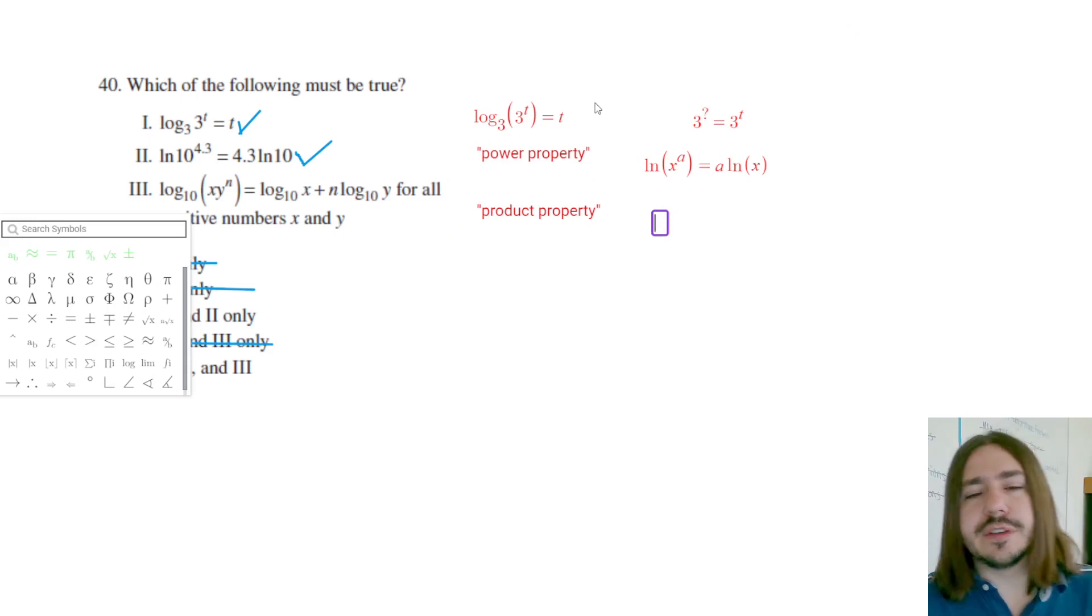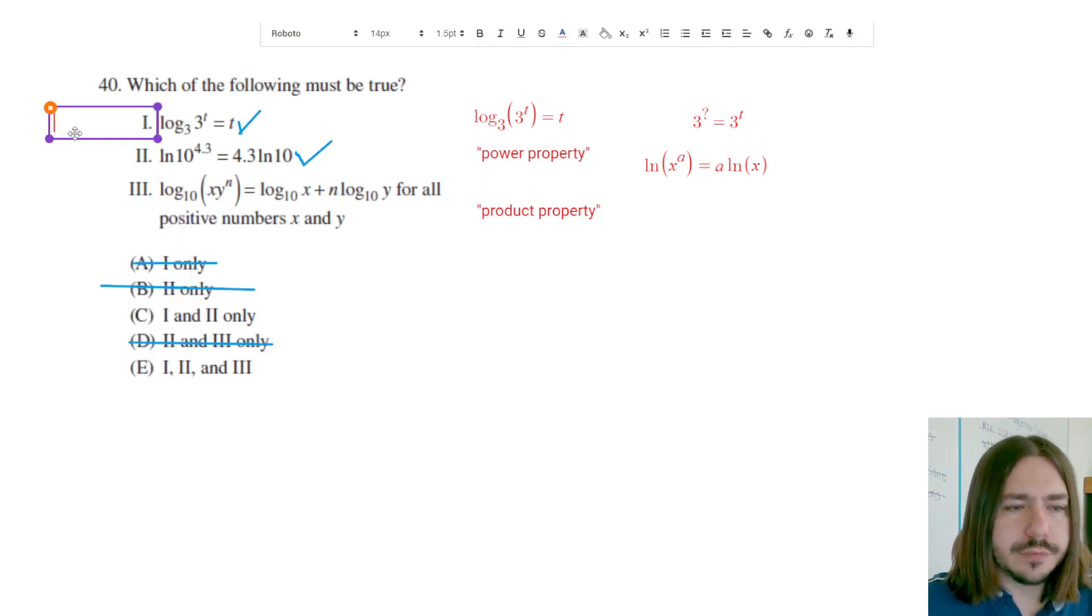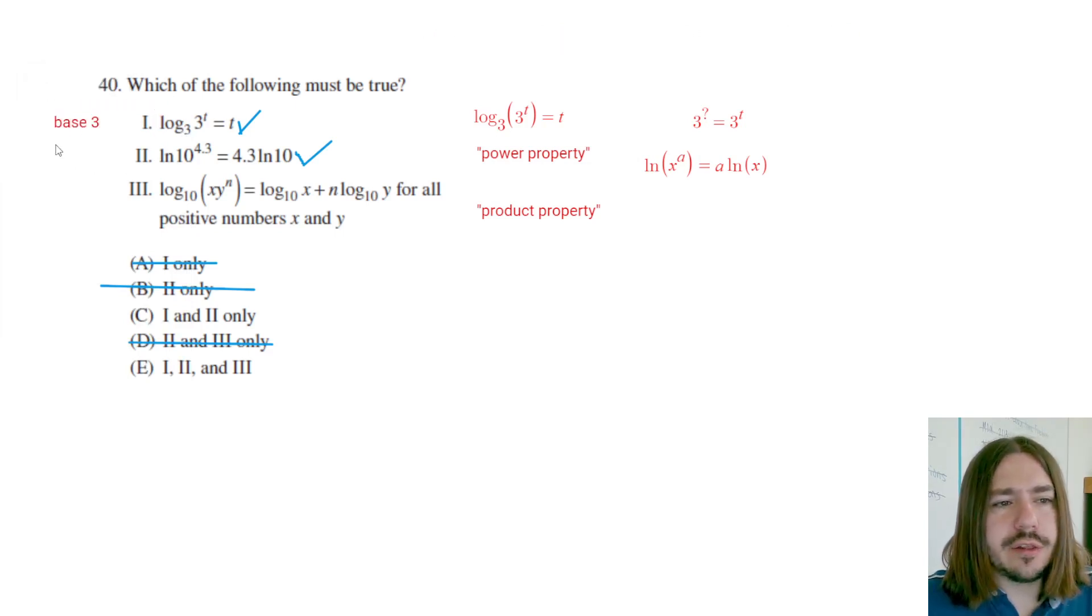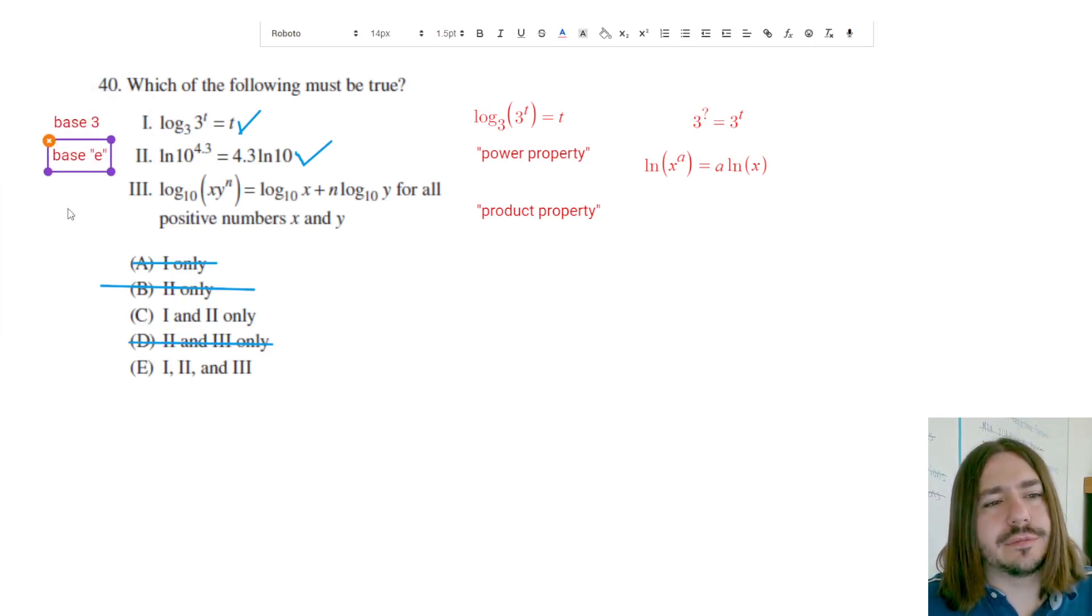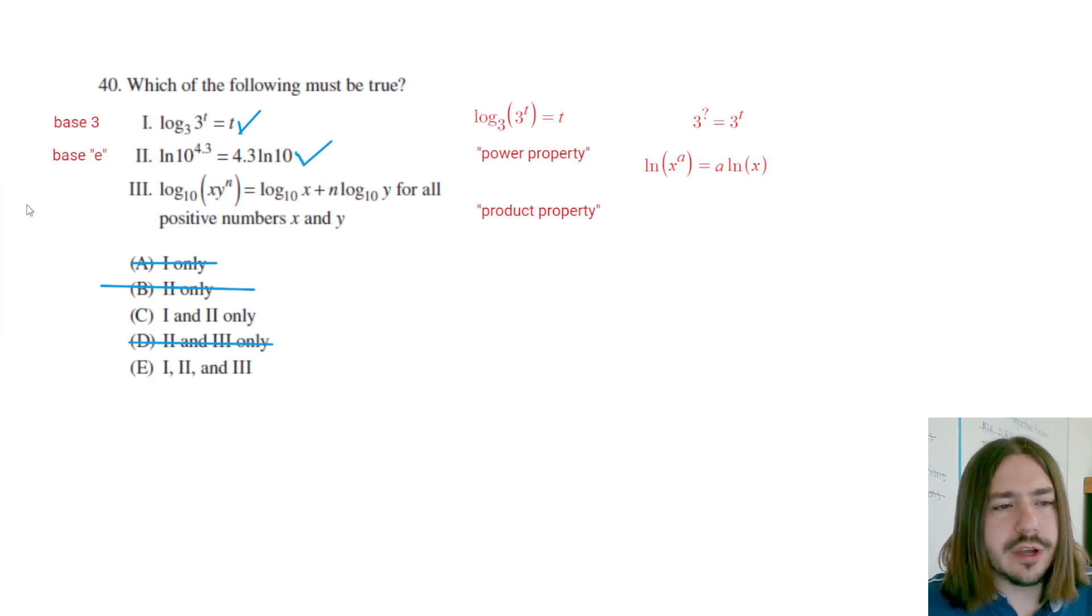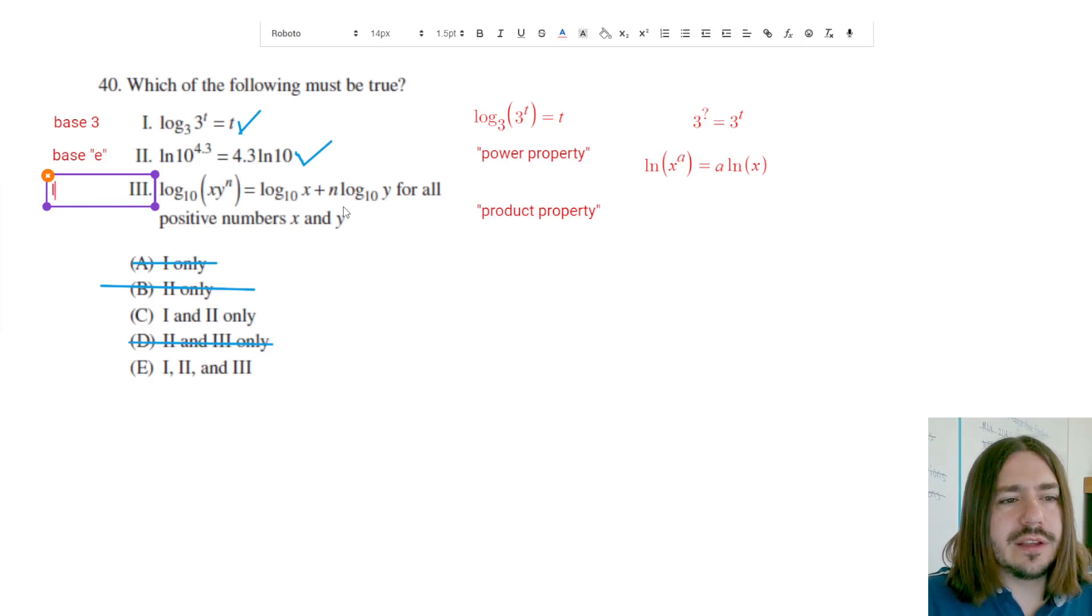These logarithm properties work for logarithms of any base. The first one had a base 3. When you see natural log, that actually has a base of Euler's number. We write it as e. You could do a little googling on Euler's number if you want to know more about that, and then this one is base 10.